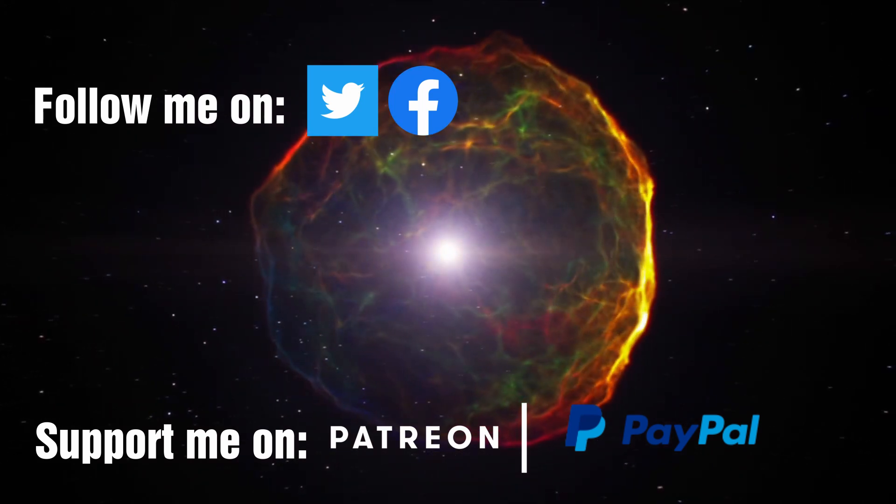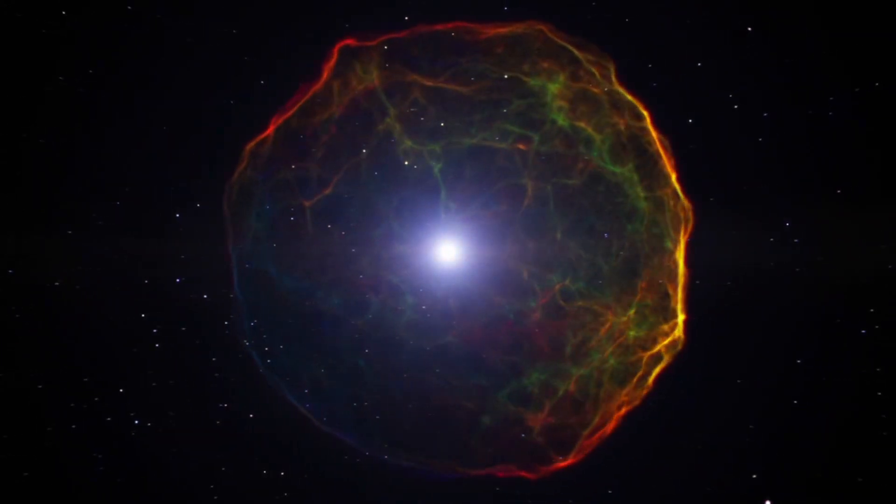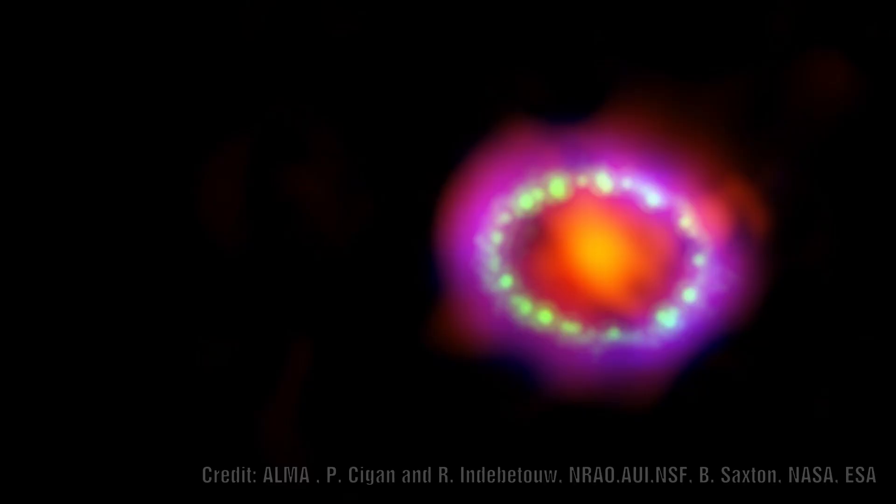Because of this, astronomers suspect that a neutron star had formed in the collapsed center of the star. For decades they eagerly awaited for the dust to clear or our imaging to improve to be able to observe if there was either a black hole or a neutron star at the center.